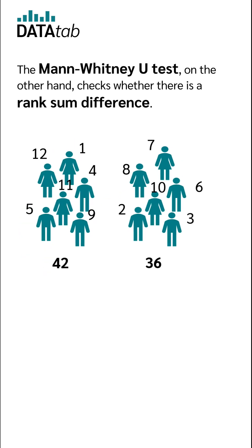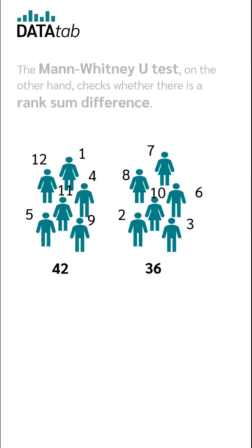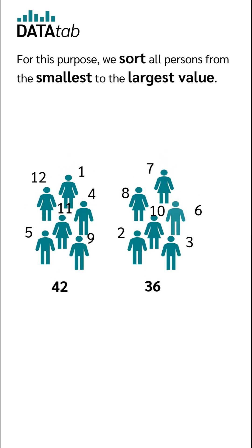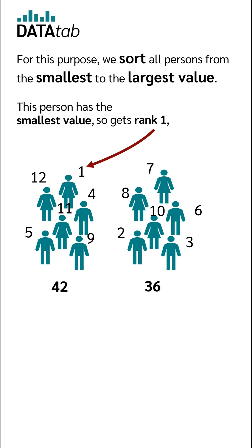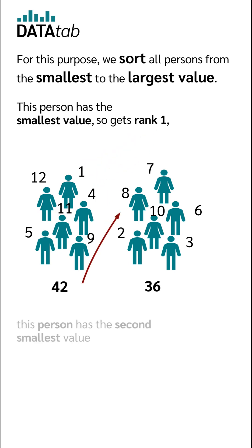The Mann-Whitney test checks whether there is a rank sum difference. For this purpose, we sort all persons from the smallest to the largest value. This person has the smallest value, so gets rank 1.